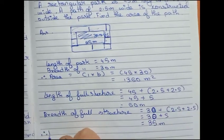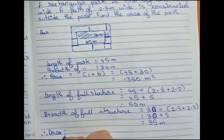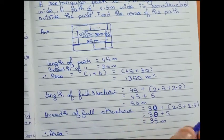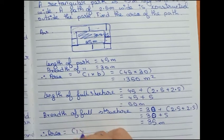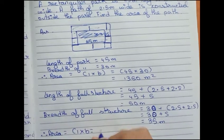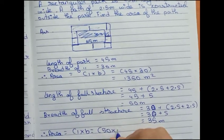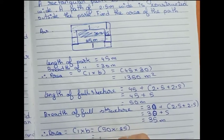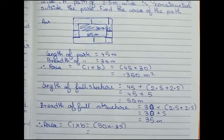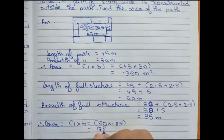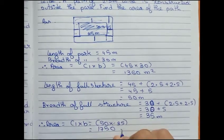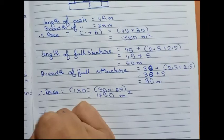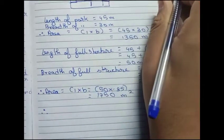Therefore, our full structure has length 50 meters and breadth 35 meters. Area of full structure equals length into breadth, which is 50 into 35, that is equal to 1750 meter square.